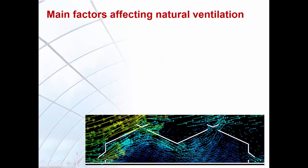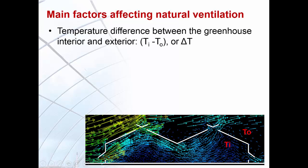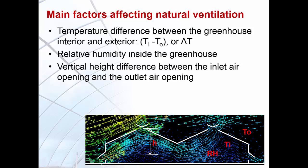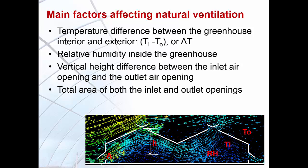The main factors affecting the natural ventilation process are: the temperature difference between the greenhouse interior and exterior (delta T); the relative humidity inside the greenhouse; the vertical height difference between the inlet air opening and the outlet air opening; the total area of both inlet and outlet openings; and pressure gradients due to wind forces.